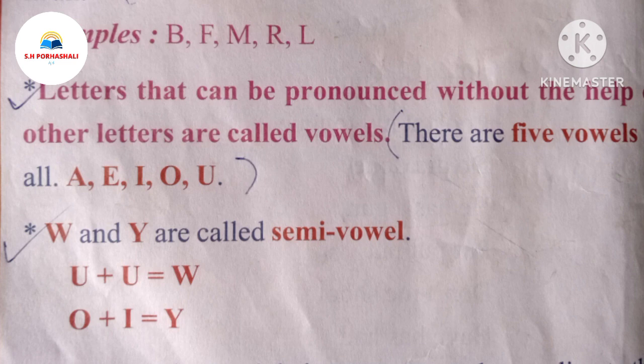Letters that can be pronounced without the help of other letters are called vowels. So unborn for high knowledge, from horrible, for a zero, for a conversation. So there are five vowels here. We have five vowels: A,